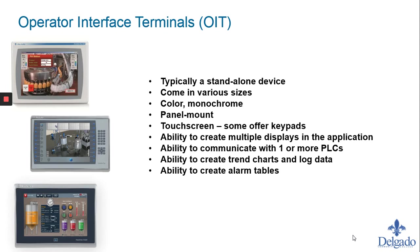The advantage of the OIT is that if you need to make changes, you can easily reprogram your panel and drop the new program in. To do that the older way with hardwired push buttons, pilot lights, and panel meters, you'd potentially be popping holes in the metal panel and rewiring things — which takes more time and labor. Some other features that operator interfaces bring include the ability to communicate to one or more PLCs, pull data from multiple devices, display it on one unit, do trend charts, log data, create alarm tables, and have alarm indications pop up based on pre-programmed conditions.